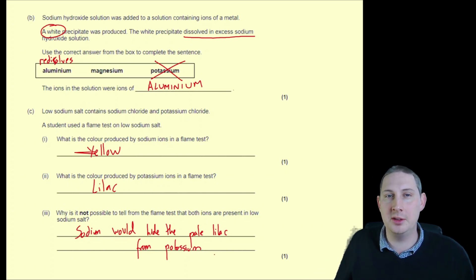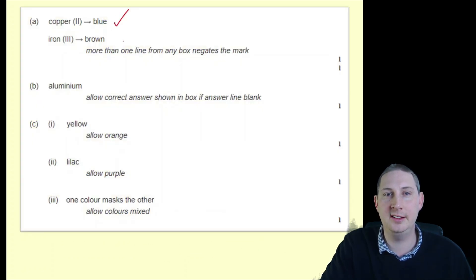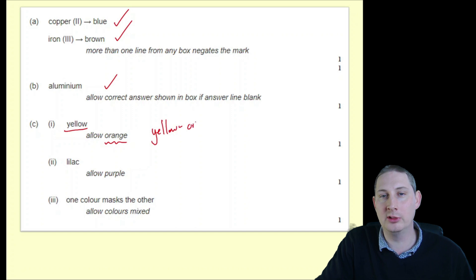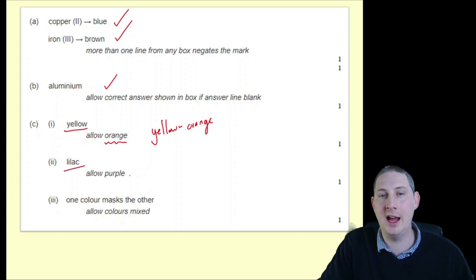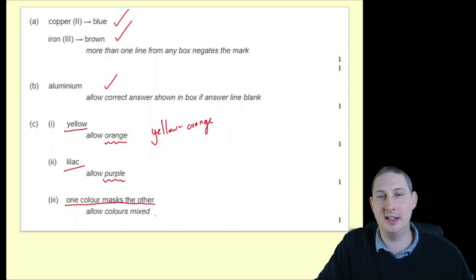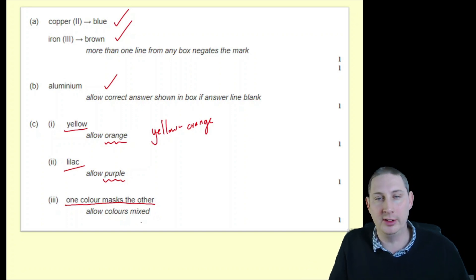Looking at the mark scheme: copper(II) gives a blue precipitate; iron(III) gives a brown precipitate; aluminium gives a white precipitate that redissolves. Sodium produces a yellow flame — the mark scheme also allows orange, so yellow-orange is safest. Potassium produces a lilac flame; the mark scheme allows purple. One colour masks the other, or you might get a mixed colour mistaken for something else, such as a reddish-orange.